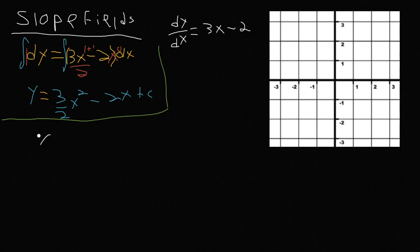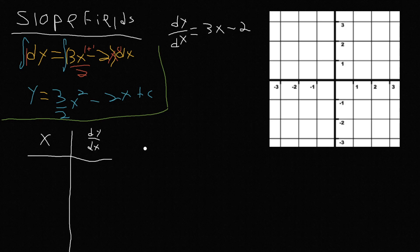We're going to look at this and see this only depends on x. So we're going to have x and dy/dx, and make a little table. Because this only depends on x, whatever the slope field is at a given x, it's going to have the same slope regardless of y, because it does not depend on y. And we're going to draw little lines to indicate the slope.